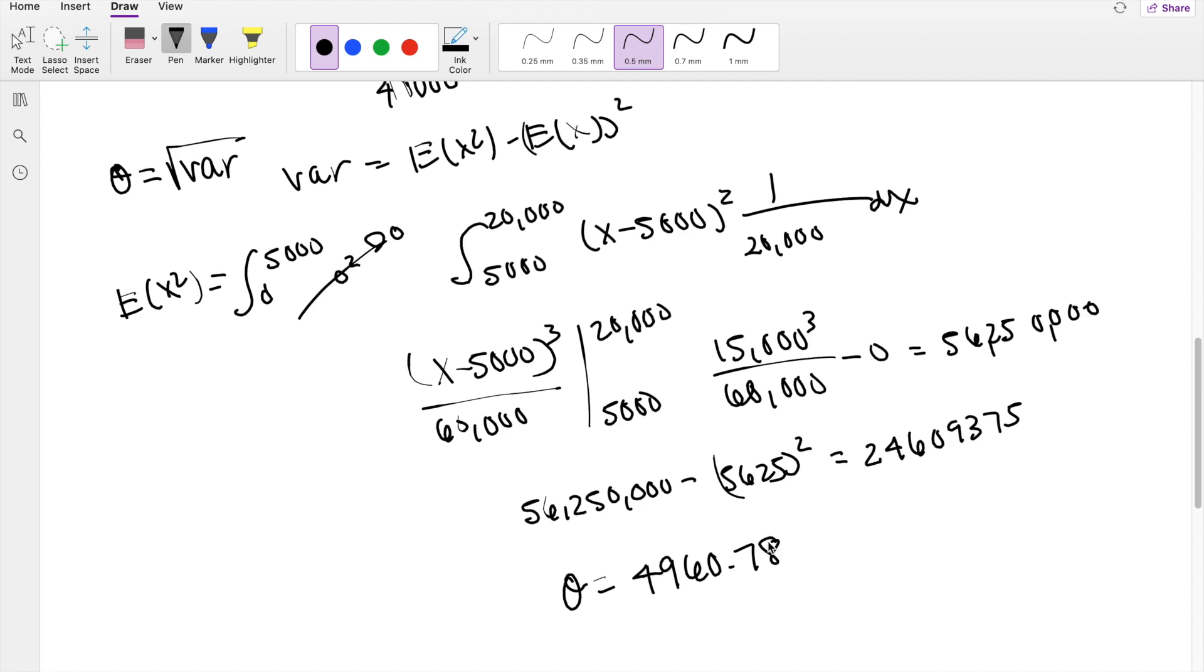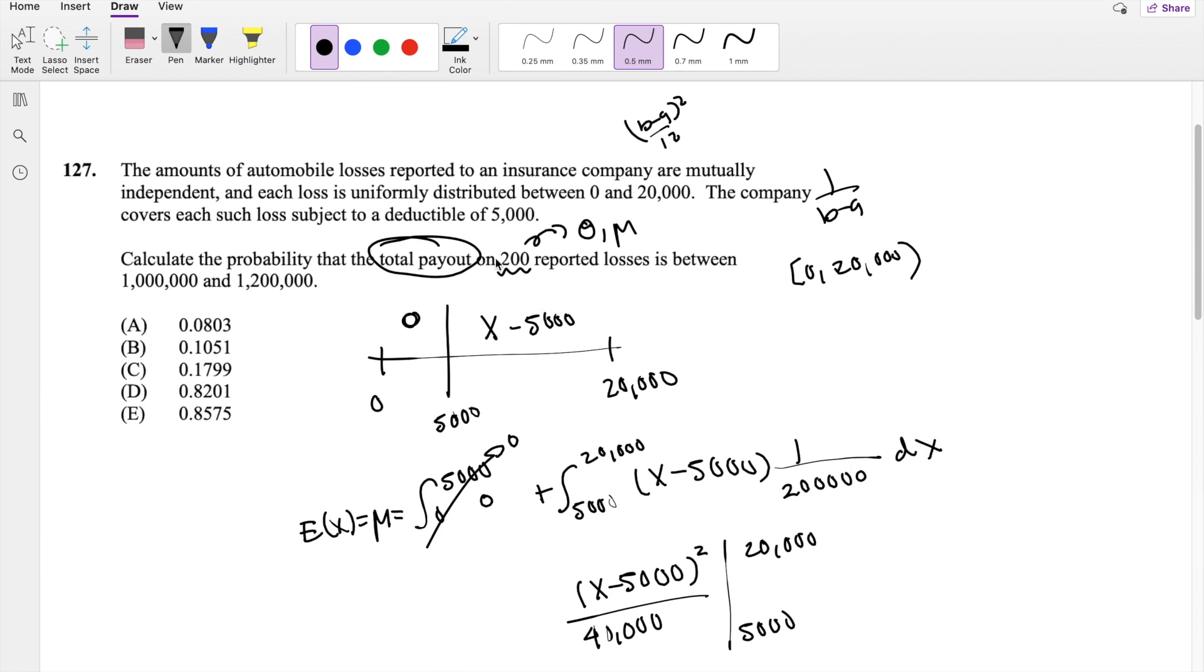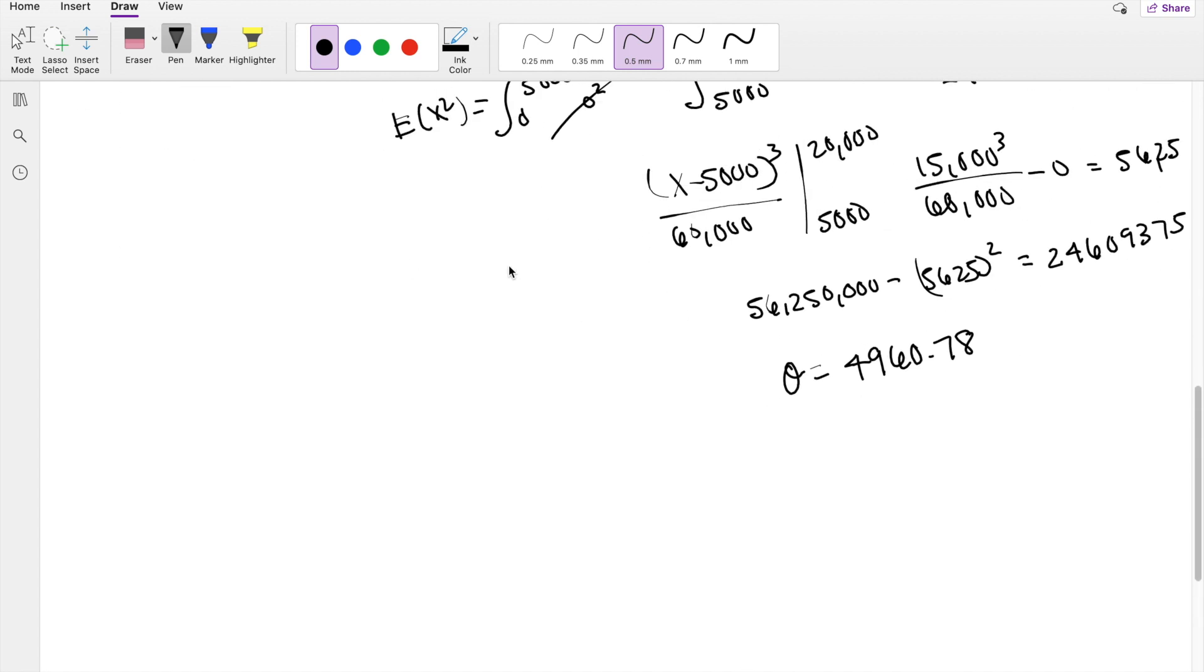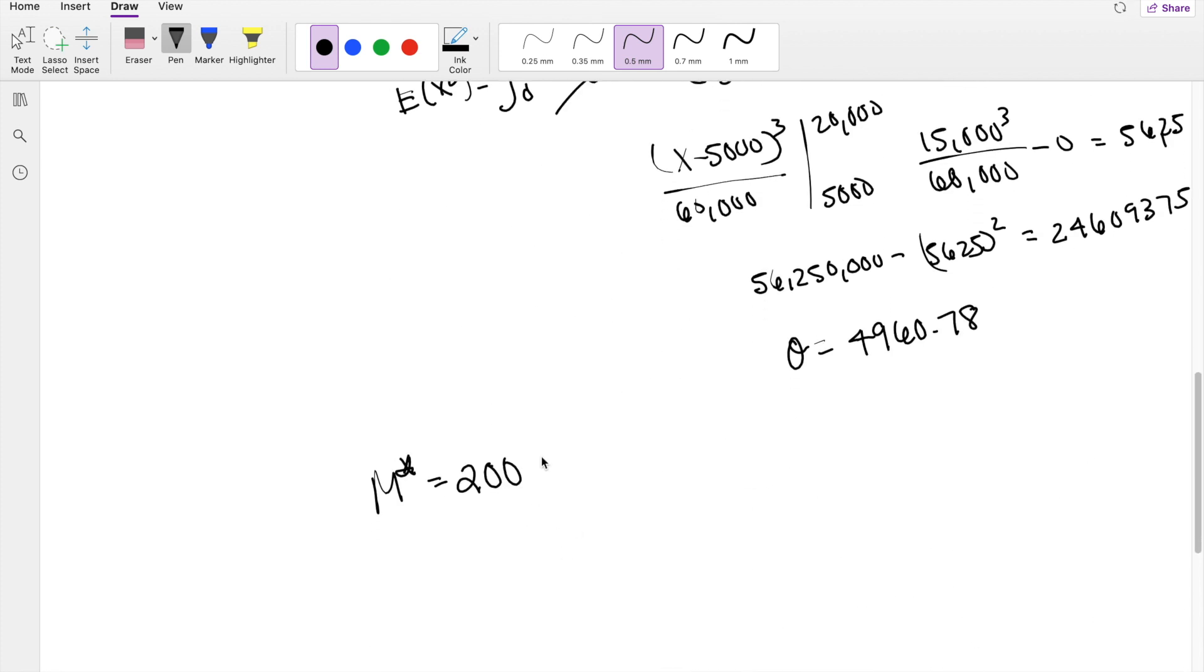But this is only for one loss, and we're trying to look at the total payout for 200 losses. So the mean for 200 losses, if each loss is about 5,625, is 200 times 5,625, which equals 1,125,000, about 1 million.